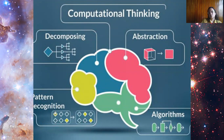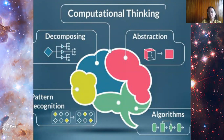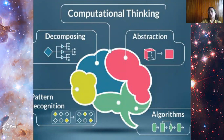After we do this decomposition, pattern recognition, and abstraction — we use abstraction to compare and contrast this problem or challenge we're presented with, with another similar problem or situation that we might have faced in the past — we enter the process of developing algorithms. An algorithm is a strategy or a step-by-step procedure that will allow us to solve the problem and also that we can later use to replicate the solution when we face the same or a similar problem.